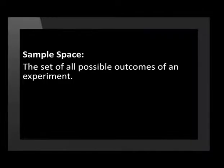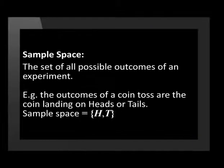The sample space is the set of all the possible outcomes of an experiment. For example, the outcomes of a coin toss are the coin landing on heads or tails. The sample space is equal to H and T, where H is the outcome head and T is the outcome tail.